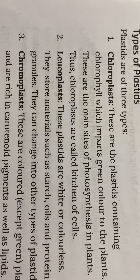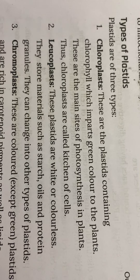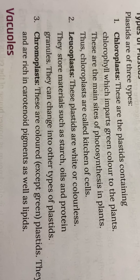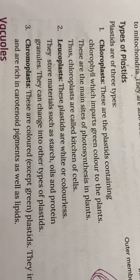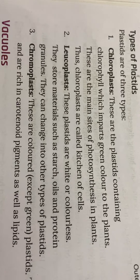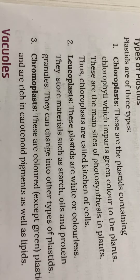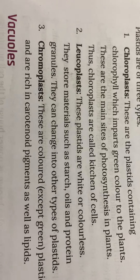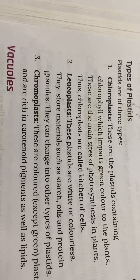The second type of plastid is the leukoplast. These plastids are white or colorless and store materials such as starch, oil, protein, and granules. They can change into another type of plastid. The third type is chromoplast. These are colored plastids, except green — because green plastids are called chloroplasts. Chromoplasts impart color to flowers and fruits through carotenoid pigments and lipids. So plastids help in photosynthesis, and chloroplasts are called the kitchen of the cell.